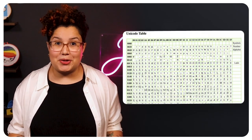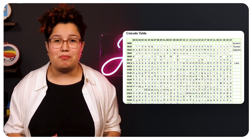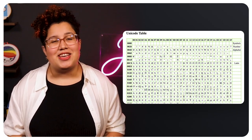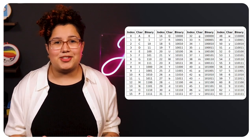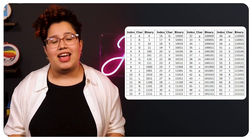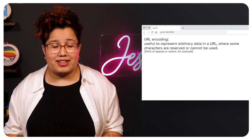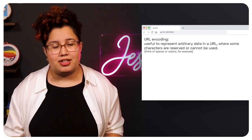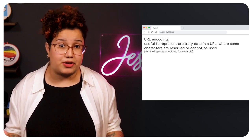You can find several encoding mechanisms out there. Apart from ASCII, you have Unicode, which allows you to represent more complex items than letters, such as emojis and other symbols. You have Base64, which lets you represent binary data — such as an image — through text. And you have URL encoding, useful to represent arbitrary data in a URL where some characters are reserved or cannot be used, like spaces and colons for example.